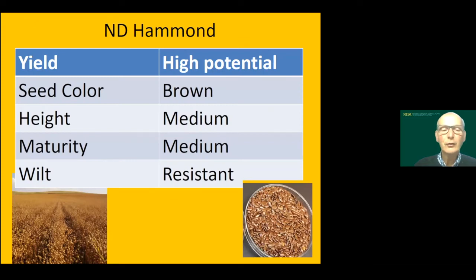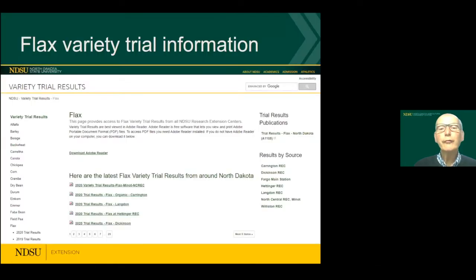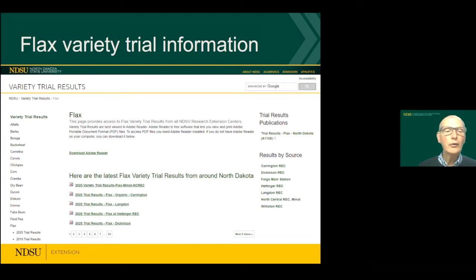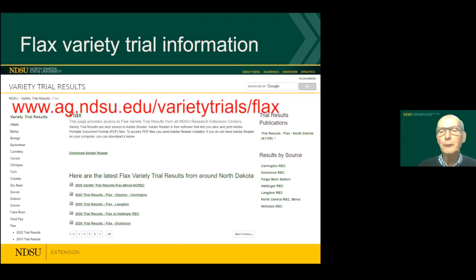The most recently released variety, ND Hammond, is a brown variety — medium height, medium maturity, and wilt resistant. For variety information, we have a variety trial website at NDSU Variety Trials. On the left you'll see all the various crops, and on the bottom you see flax. Clicking that brings up individual site data for locations like Minot and Carrington, as well as a trial results publication in PDF format — publication A1105 — which has all data collected collectively.